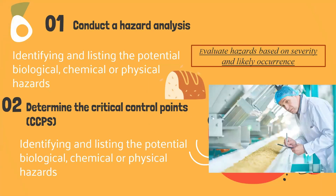Principle number one: conduct a hazard analysis. Hazard analysis is carried out in two stages. One: identifying and listing the potential biological, chemical, and/or physical hazards associated with a production process. Two: evaluating hazards based on severity and likelihood of occurrence. Upon completing these two stages, a control measure is made to prevent the hazard.